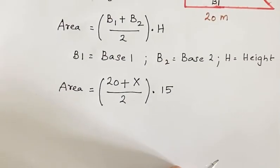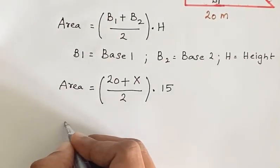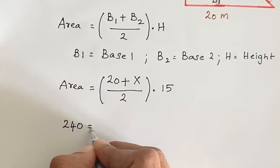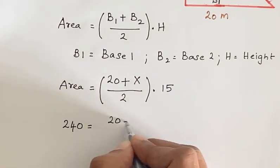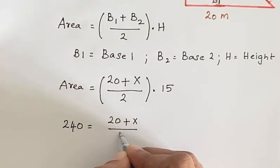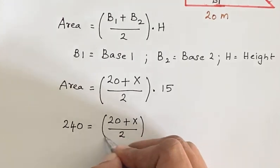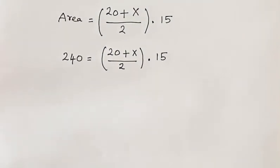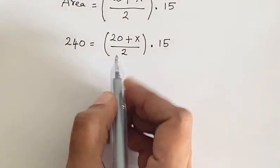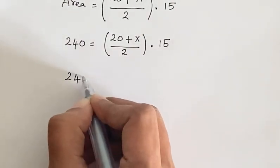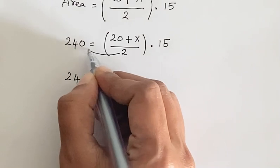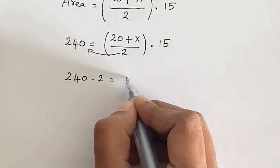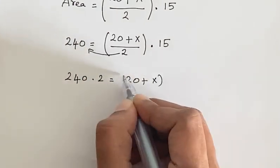The area is given as 240 square meters. So substitute this value here. We get 240 equals 20 plus x divided by 2 times 15. Now 240 times 2 equals 20 plus x times 15.